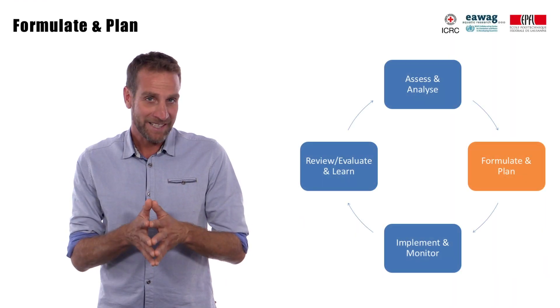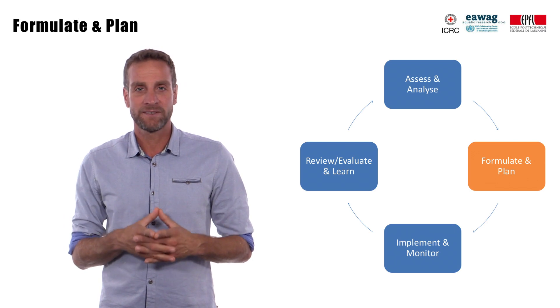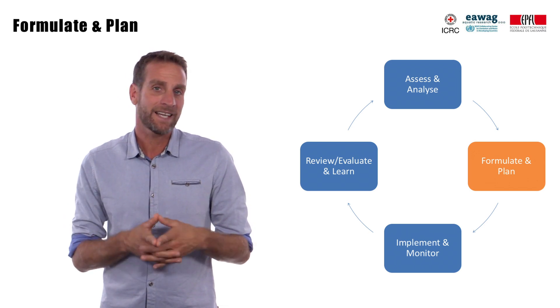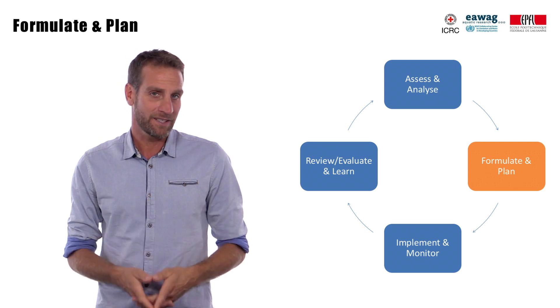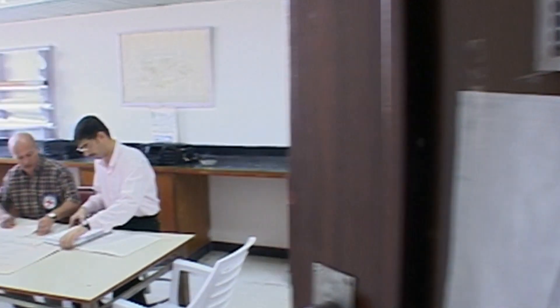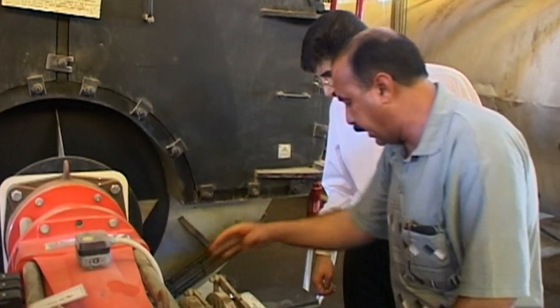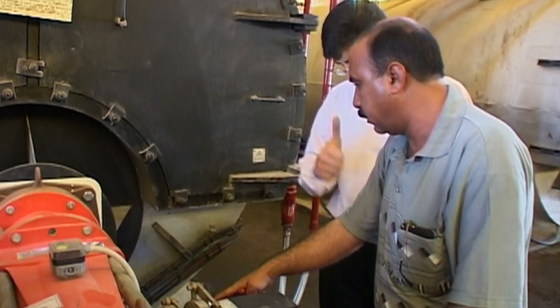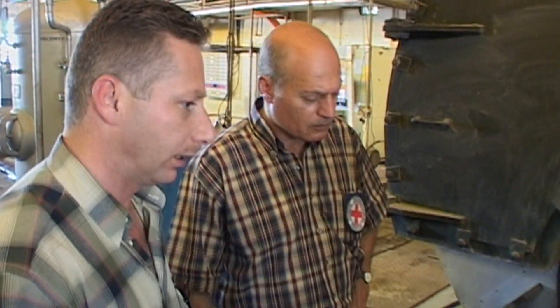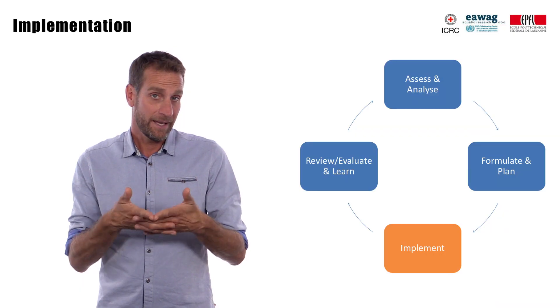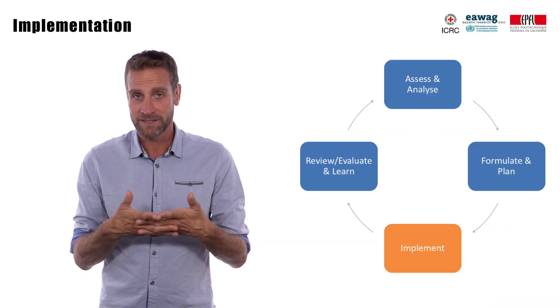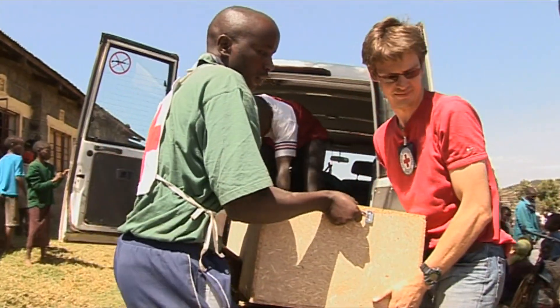In the second step, you have to formulate clear objectives based on context analysis and your assessment, and describe measurable intended results. You should assess the feasibility of your project — particular attention should be paid to future operation and maintenance. You have to plan activities and resources required to accomplish the objective. Then, based on your plan of actions, you can implement your project.